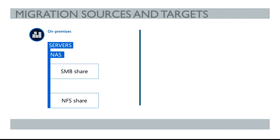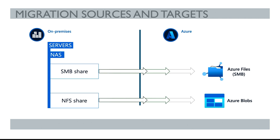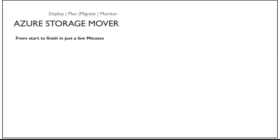When you have an on-prem NAS server, you can have SMB or NFS. In Azure, you have either SMB like Azure Files, or you have Blob. If you're going from SMB, you go to Azure Files; if you're going from NFS, you go to Azure Blob. Those are the two options with Azure Storage Mover. It's a full guided migration service — it guides you through the whole migration process from start to finish in minutes, as you will see in the demo.